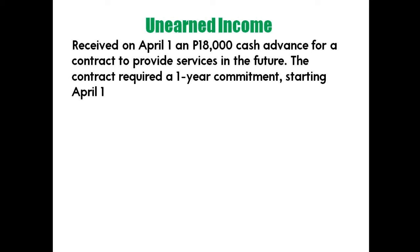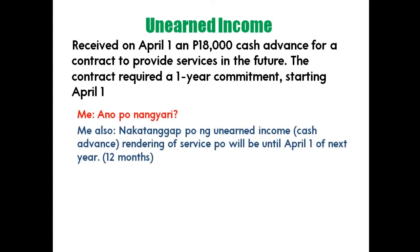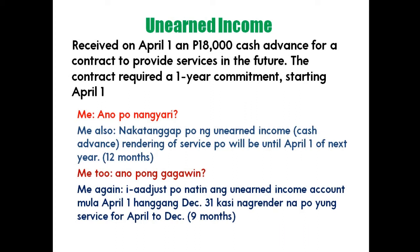Next is unearned income. Problem: Received on April 1 an 18,000 cash advance for a contract to provide services in the future. The contract required a one-year commitment starting April 1. The company received unearned income and will render service until April 1 of next year — 12 months total. We adjust for April 1 to December 31, which is nine months of service already rendered.